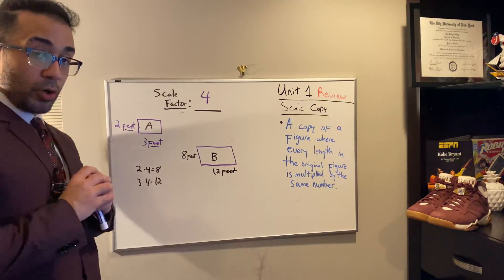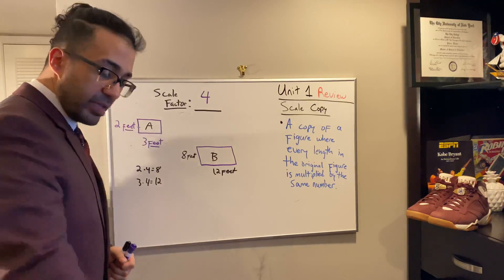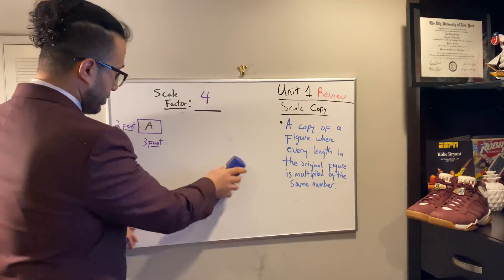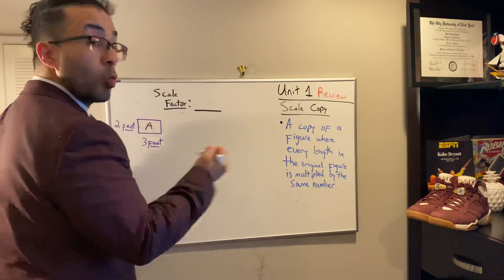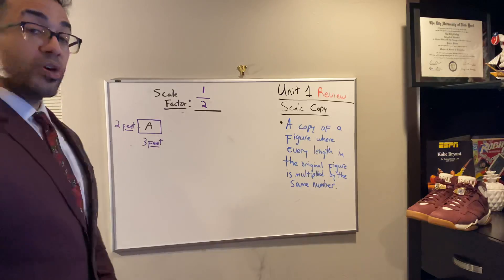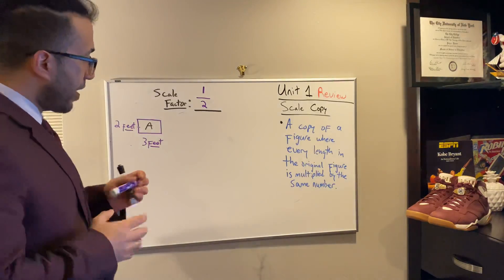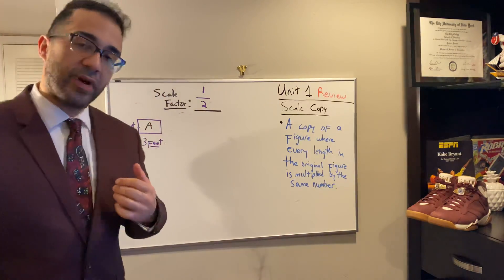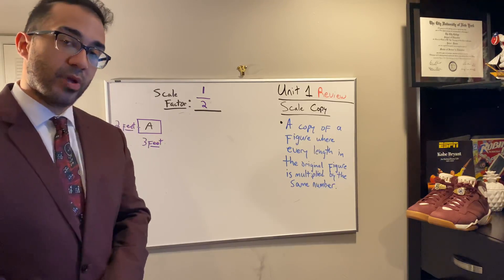Now, suppose we are given a scale factor, not four, but we're given a scale factor of one half. We're still going to do the same process of multiplication. But now I'm asking you, I'm wondering, if we're multiplying by a scale factor, what has to be true about our new shape that we're creating, our new figure?